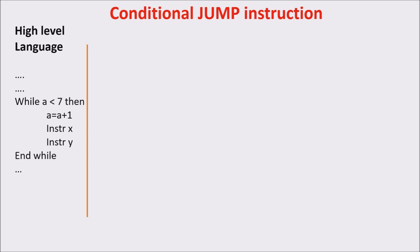Let's see an example of a conditional jump used in a loop. This piece of program says that while A is less than 7, the CPU executes instructions X and Y. This is a typical high-level piece of program, but let's see how we can translate it in our low-level language — the language we have created to represent Scott CPU operations.